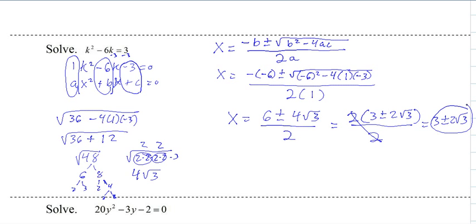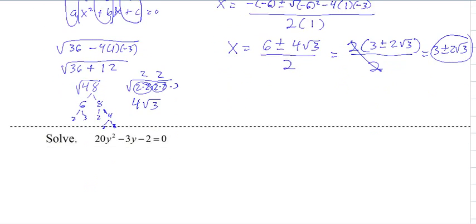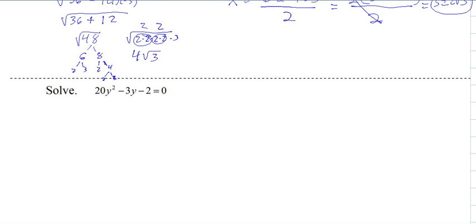Now, the reason we have to reduce it is it's just like any other fraction. We want the simplest form. And so if they all contain a common factor, we need to factor it out and cancel. All right, here's the last one to try. Give it a shot.